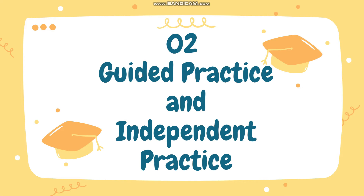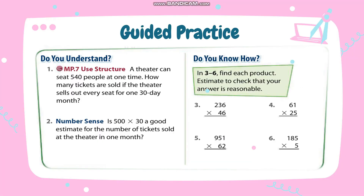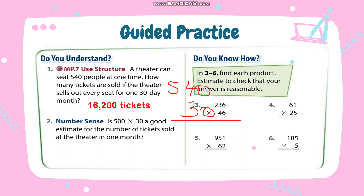Let's proceed to the guided practice and independent practice. A theater can seat 540 people at one time. How many tickets are sold if the theater sells out every seat for one 30-day month? The answer is 16,200. We simply multiply 540 by 30. Cancel the two zeros and put them in the product. Then 4 times 3 is 12, regroup 1. 5 times 3 is 15, plus 1 is 16. That's why the answer is 16,200.